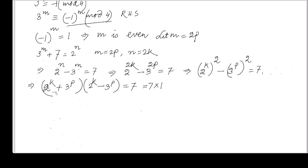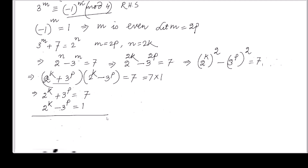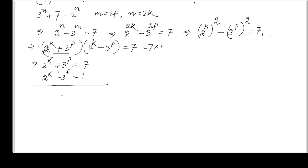Comparing the larger factor with the larger term, I get: 2 raised to the power k plus 3 raised to the power p equals 7, and 2 raised to the power k minus 3 raised to the power p equals 1. Adding these two equations: 2 times 2 raised to the power k equals 8, so 2 raised to the power k equals 4, which is 2 raised to the power 2, giving k equals 2.